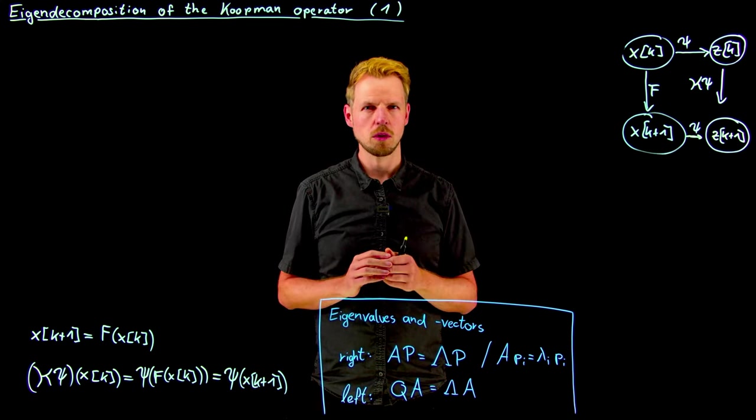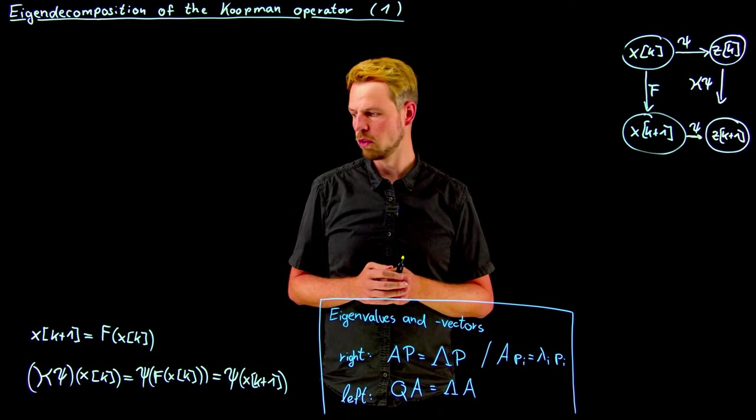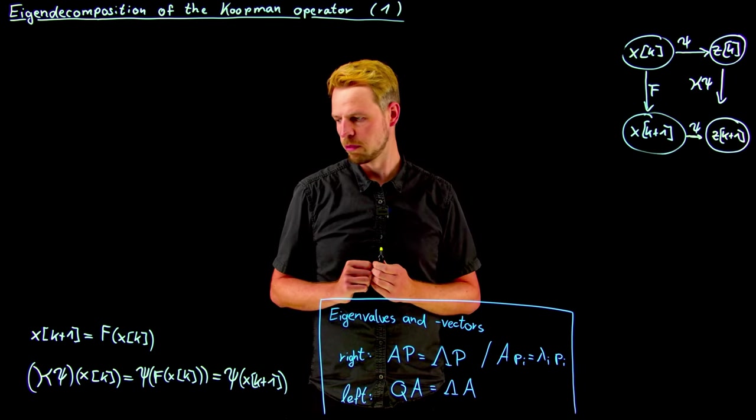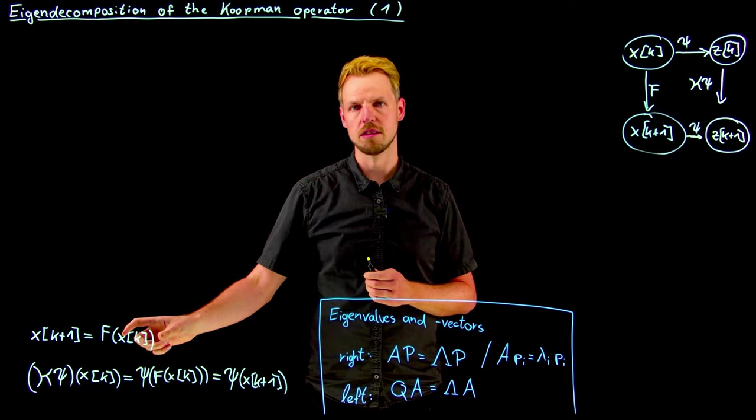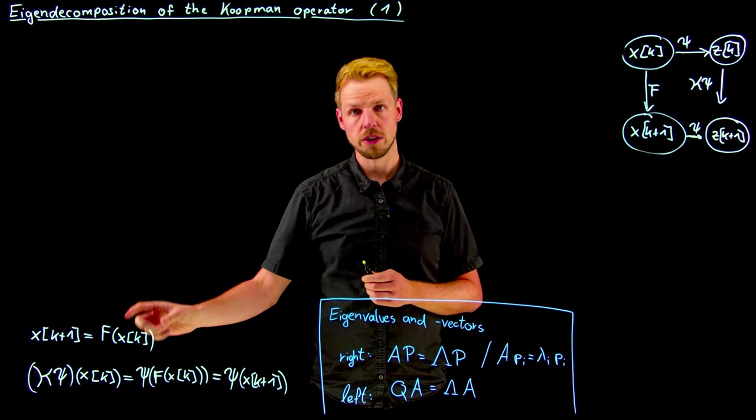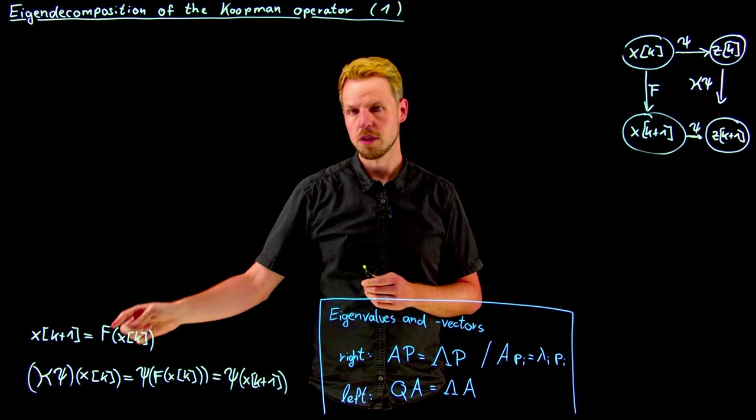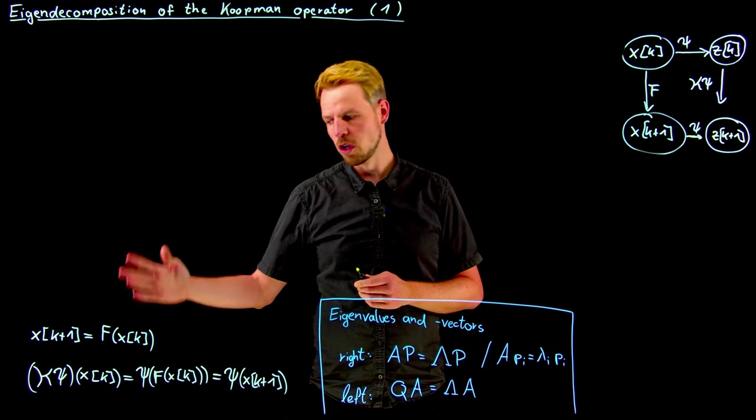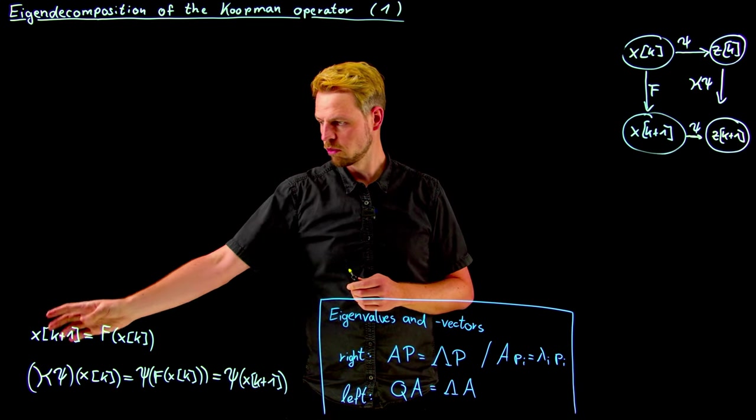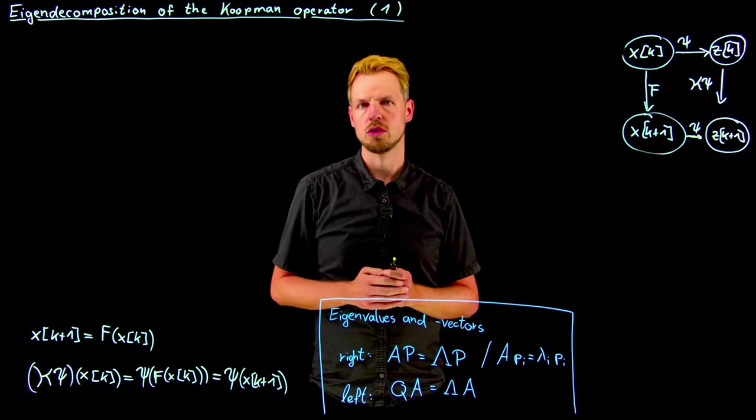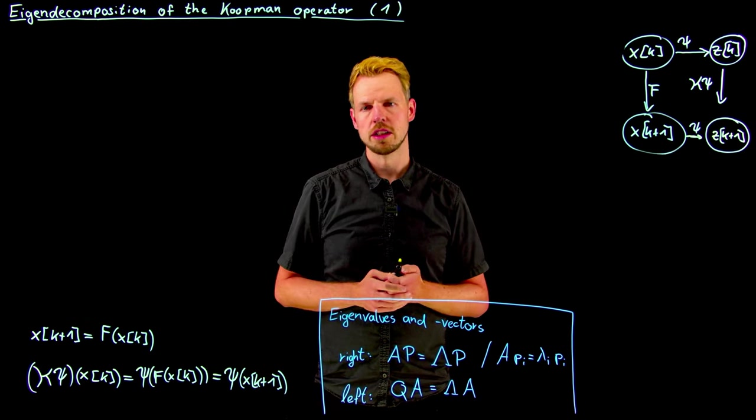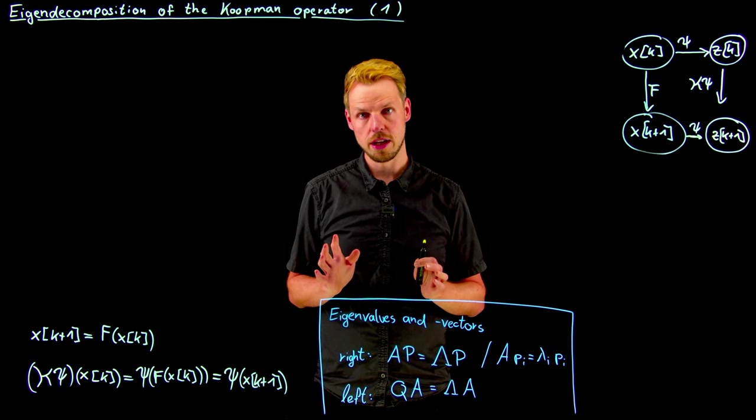So the setting was, as we introduced it in the previous video, that we want to study nonlinear dynamic systems of this type, where we have a state x, this is usually a vector in R^n at each time point k, and f iterates this forward or flows the state forward in discrete time to produce a new state. And since it's a nonlinear system, this can be very hard to analyze.